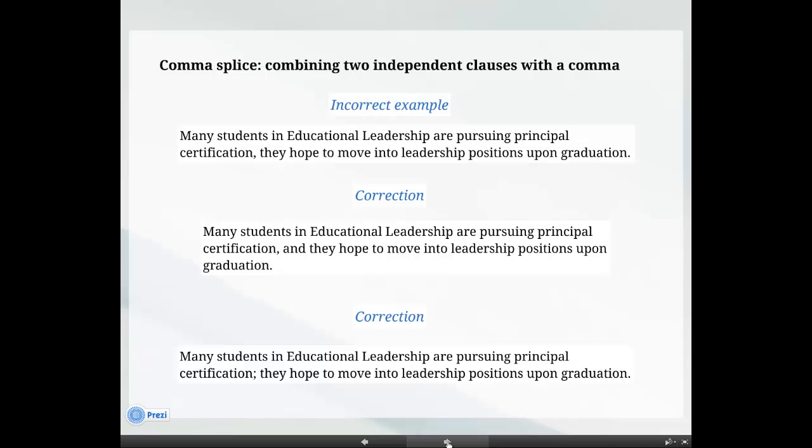A comma splice involves combining two independent clauses, that is, clauses containing a subject and a verb, with a comma. To correct, replace the comma with a semicolon or add an appropriate conjunction or a conjunctive adverb.